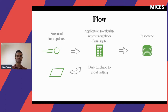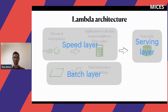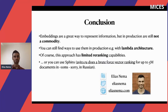We also have a daily batch job to avoid drifting — both model drift and embedding space drift — because these are not precise calculations. If you take a step back and look at all these steps, it becomes clear that this is a very classical lambda architecture we've built here, with a speed layer, a batch layer, and a serving layer.